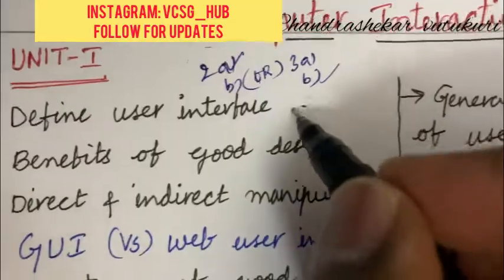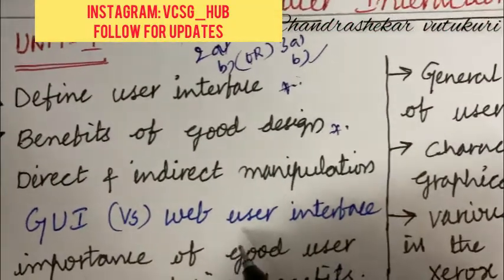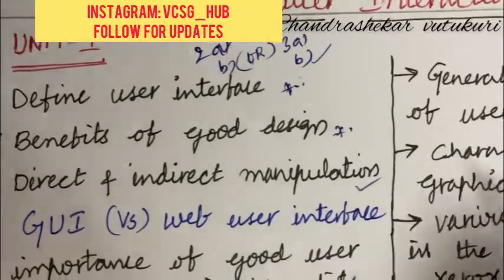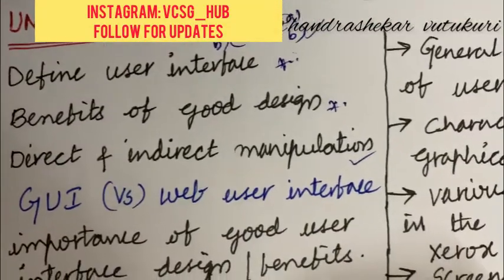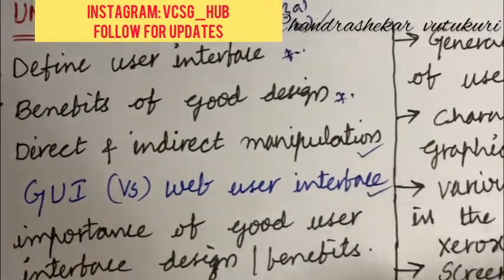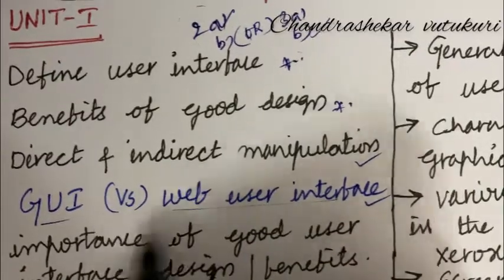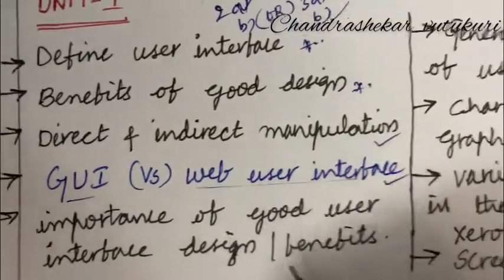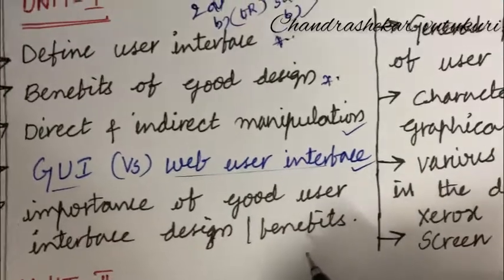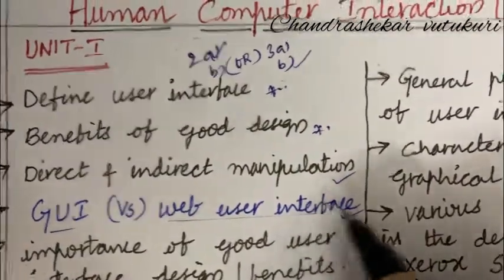Let's jump into the unit 1 questions. Define the user interface may be a short question. The benefits of good design may also be a short question. Direct and indirect manipulation is one of the very important questions which may occur in 2A. GUI versus web user interface, a difference, is also a very important question. If it is asked individually, they may ask in 2 mark combination or that may be a 5 mark question. The importance of good user interface design benefits - from this you may be getting 1A as well as 2AB.